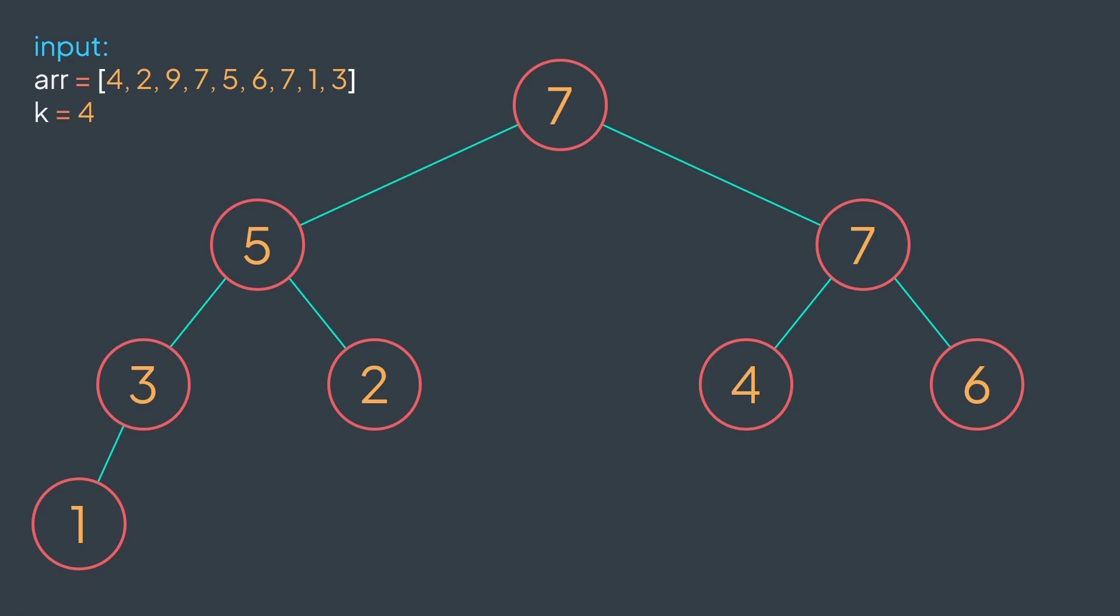Second iteration, we extract the root, and it costs O of log n to rearrange, to maintain the order. Third iteration, same thing. Now that we did the k-1 iterations, the next extracted node is the kth largest element, we return it. Here it's 6.